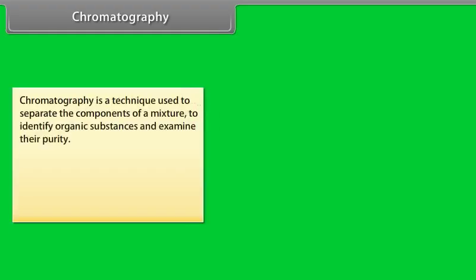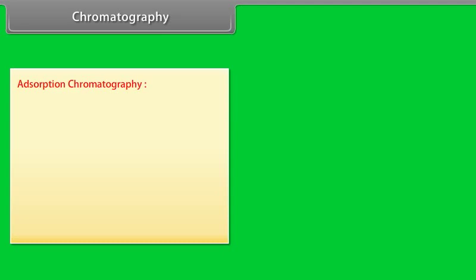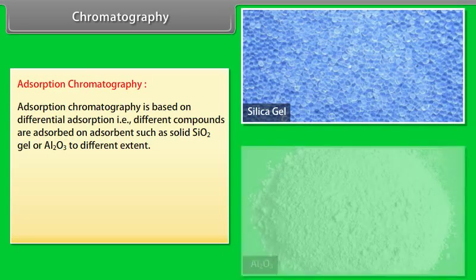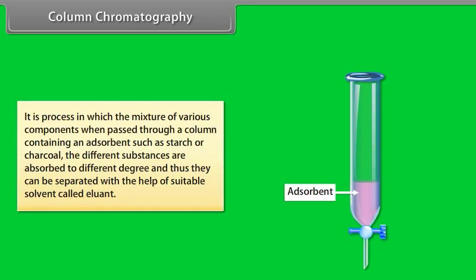Chromatography is a technique used to separate the components of a mixture, to identify organic substances, and examine their purity. Classification of chromatography: adsorption chromatography and partition chromatography. Adsorption chromatography is based on differential adsorption — different compounds are adsorbed on adsorbents such as SiO₂ gel or Al₂O₃ to different extents. Based on differential adsorption, there are two types: column chromatography and thin layer chromatography.